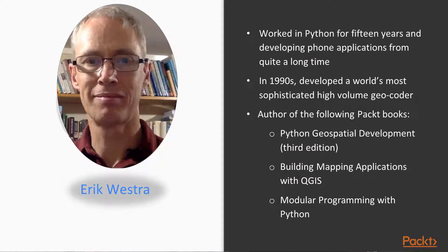I've been developing software for a long time and have worked almost exclusively in Python for 15 years, though in the last year or two I've also been developing phone apps using JavaScript and Objective-C. In the 1990s, I developed one of the most sophisticated systems in the world for running urgent messenger delivery companies, then turned my attention to building a high-volume geocoder for consolidating online classified ads. More recently, I've been working on developing phone apps that capture and record the user's location, both as a guide for cyclists and to detect possible fraud when making online transactions.